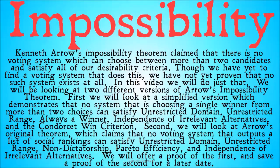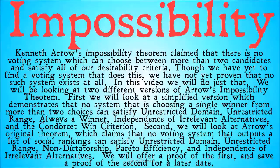In this video, we're going to do just that. We're going to do the full proof for a simpler version of Arrow's Impossibility Theorem and then just give a statement of the more complicated one. First, we're going to look at a simplified version which demonstrates that no system choosing a single winner from more than two choices can satisfy unrestricted domain, unrestricted range, always a winner, independence of irrelevant alternatives, and the Condorcet-Win criterion.